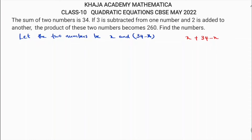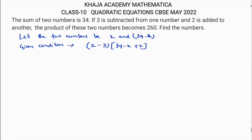The condition given is: if 3 is subtracted from one number, that is x minus 3, and 2 is added to the other number, that is 34 minus x plus 2. The product of these two numbers is 260. So one number is x minus 3 and the other number is 34 minus x plus 2, which gives us (x minus 3) times (36 minus x) equals 260.